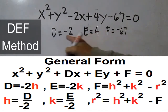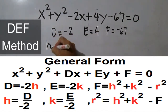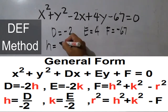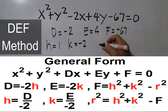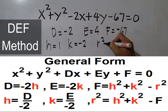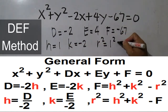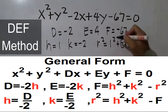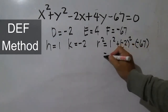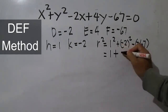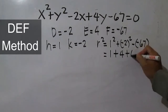Since d is equal to negative 2, h is equal to negative d divided by 2, so h equals 1. Since e is equal to 4, k is equal to negative e divided by 2, so k equals negative 2. And r squared is equal to h squared plus k squared minus f.